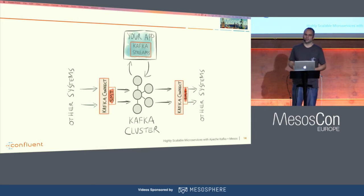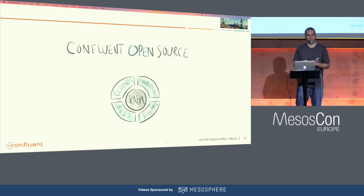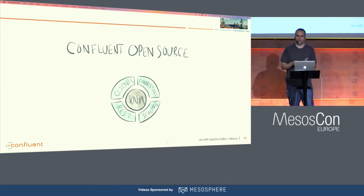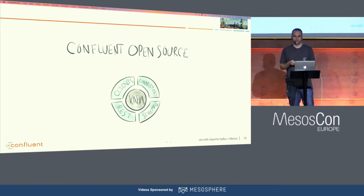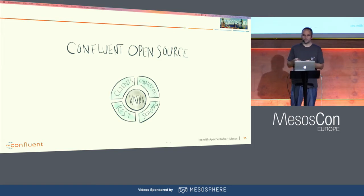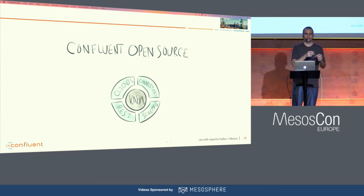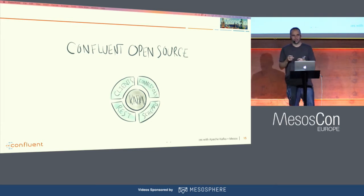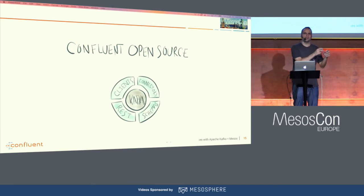On top of the open source Kafka, there are also Confluent open source components, such as the REST proxy — if you don't want to use Java or .NET or Python but also HTTP. Another component is the schema registry, which defines structures in Avro and validates incoming and outgoing messages. It leverages Avro features like schema evolution, so you don't have to deploy updates on the producer and consumer side at the same time. That's very important for microservices where components are independent — the producer can upgrade to version two while the consumer is still on version one.